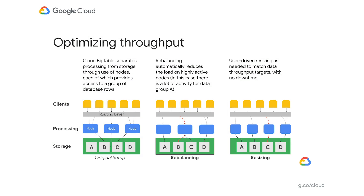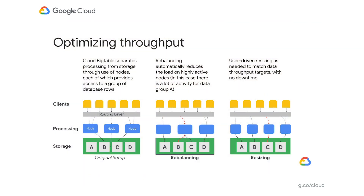Through the separation of processing and storage, Cloud Bigtable is able to automatically configure throughput by adjusting the association of nodes and data. In the rebalancing example, if node A is experiencing heavy load, the routing layer can move some of the traffic to a less heavily loaded node, improving overall performance. Resizing comes into play when a node is added, again ensuring balanced load across your nodes and best overall throughput of the system. It also offers zero-touch failover for high availability and a range of other use cases.